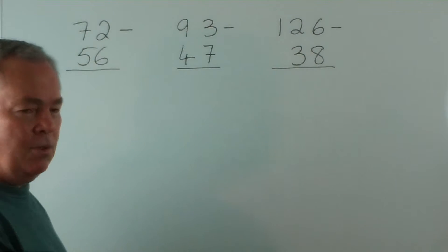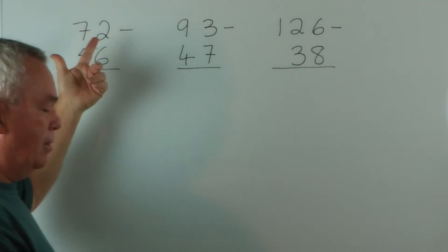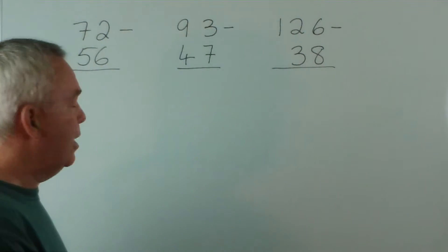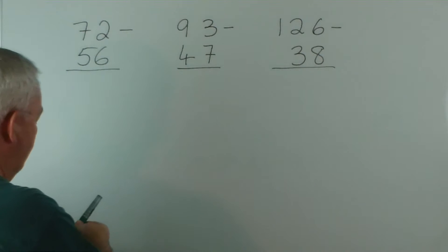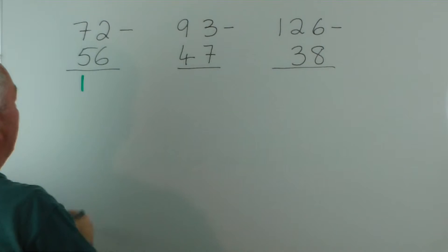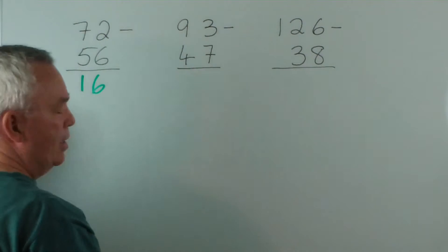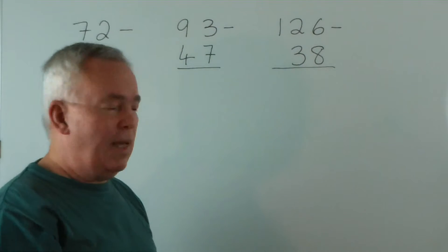From 56 up to 72, we would go 56, 66 — ooh, it went to 76, that's too high! So 56 up to 66 is 10. And from 66 to 72 is another 6. That's it — we just counted up.